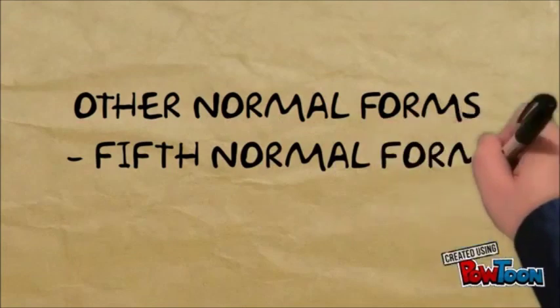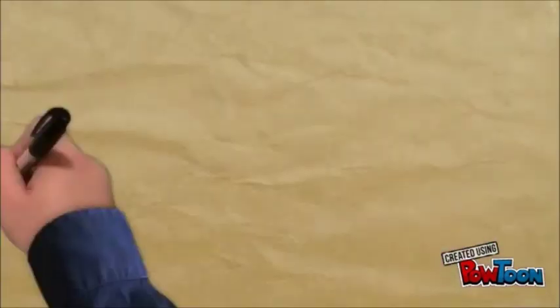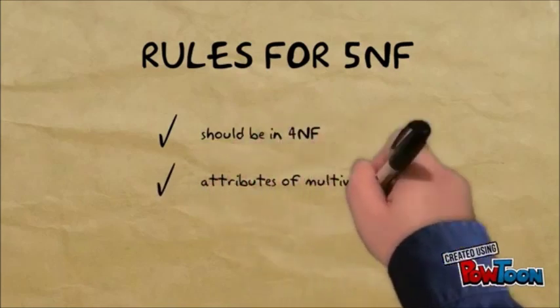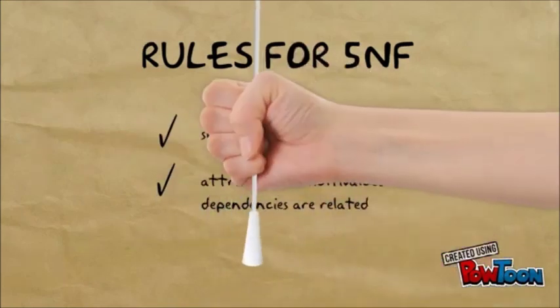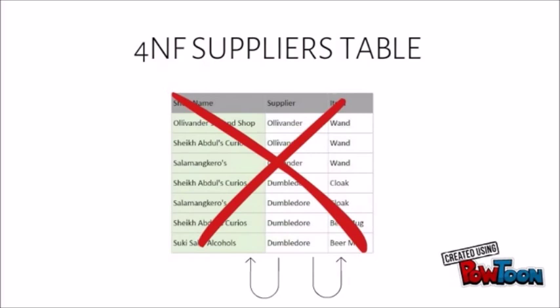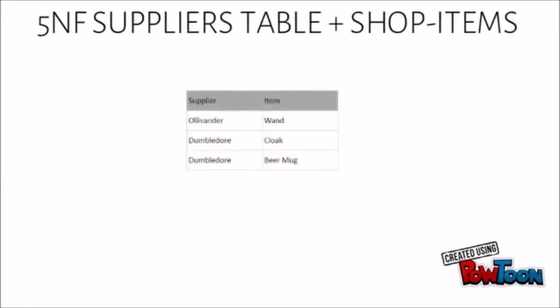The last form we will be discussing is the fifth normal form. 5NF conditions are that the schema is in the fourth normal form, and the attributes of the multivalued dependencies are related. This is our suppliers table, with a new column called the shop name. This is in 4NF, but not in 5NF, because there is a lot of data duplication that's happening.